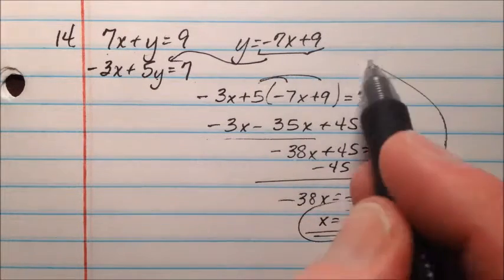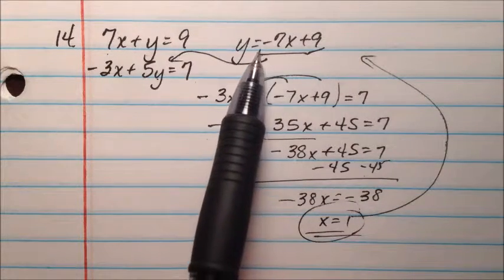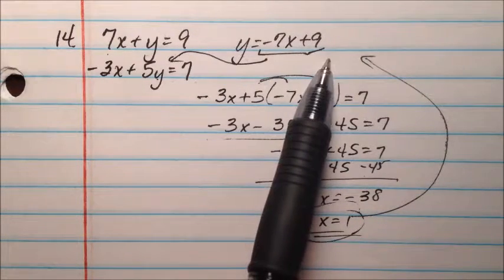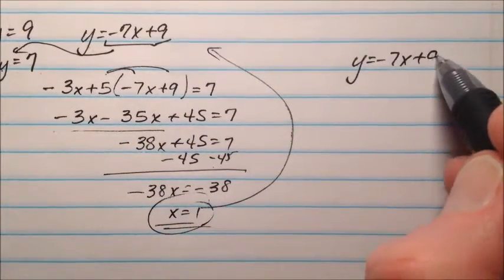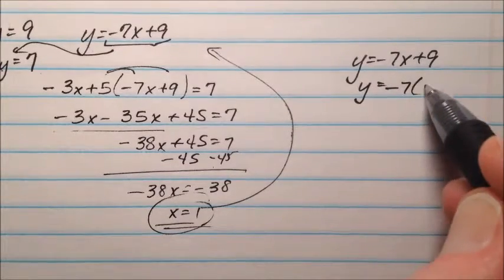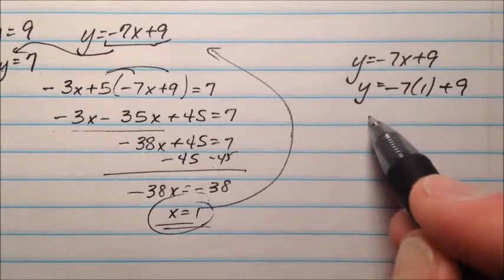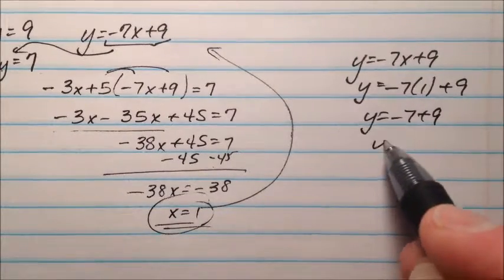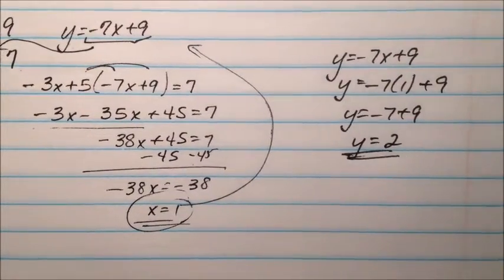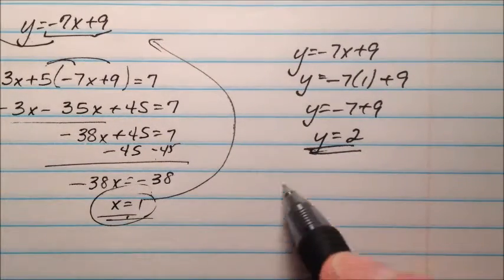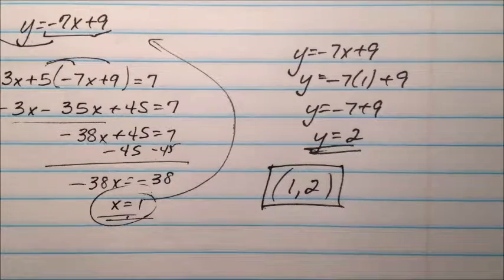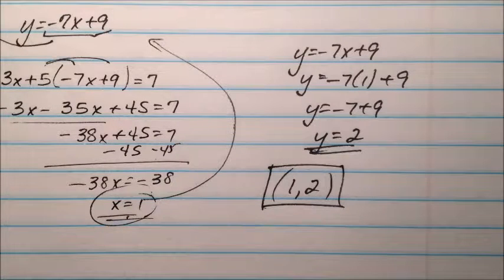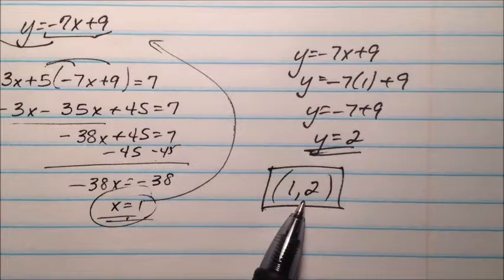Subtracting 45 from both sides gives negative 38x equals negative 38, so x equals 1. We plug that back into the equation where y is already solved for: y equals negative 7x plus 9, so y equals negative 7 times 1 plus 9, which is negative 7 plus 9, which is 2. So the ordered pair is 1, 2. If you're going to classify this system, it will be consistent and independent since it has one intersection at the point 1, 2.